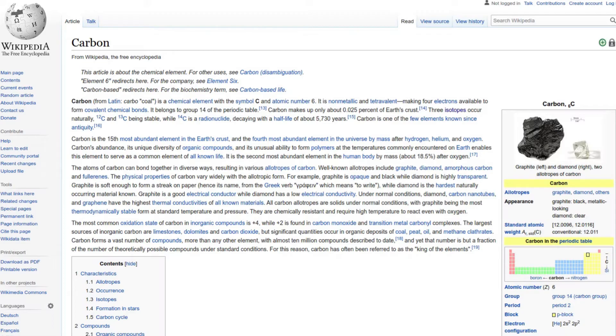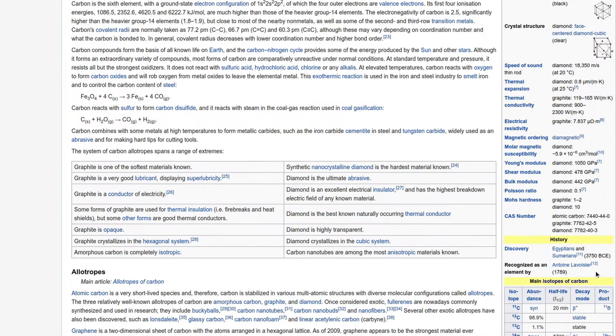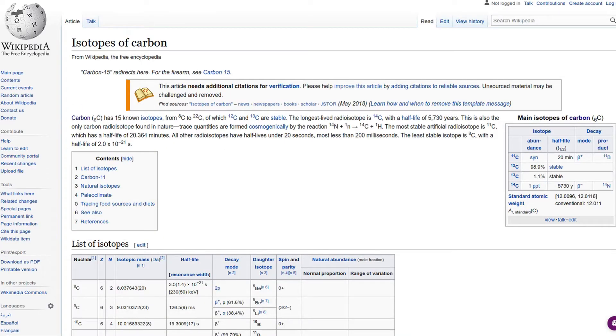If you are curious about what isotopes exist for each element on the periodic table, I find Wikipedia is an excellent source of information for this type of thing. Go ahead and look up a few elements, you might be intrigued.